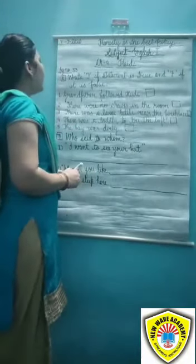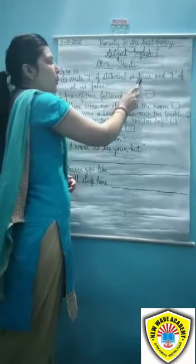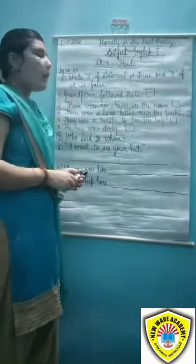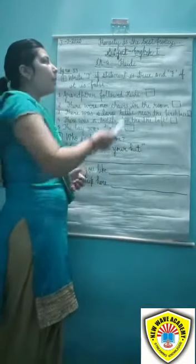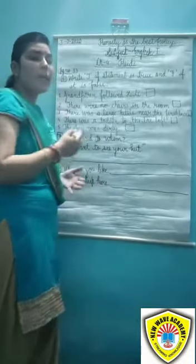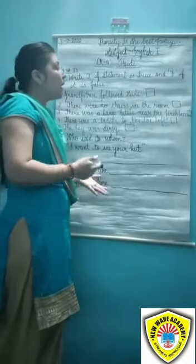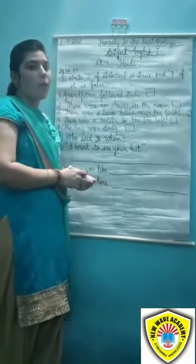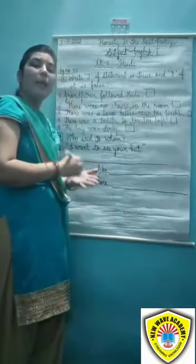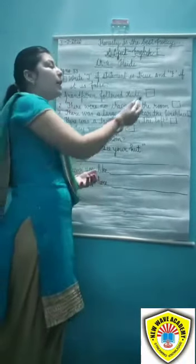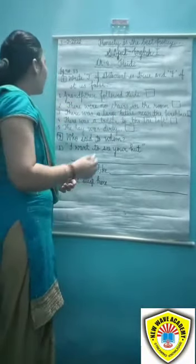Look at section E. Students, what do we need to write? T if the statement is true, and F if it is false. We have some statements related to chapter number 4, and we need to read them carefully and decide whether each statement is true or false. If the statement is true, we write T; if it is false or wrong, we write F. Clear students? So let us start with the first statement.